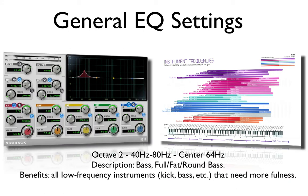Octave 2: 40 hertz to 80 hertz with a center point of 64 hertz, will have a very bassy, full, fat, round bass type of sound. The benefits of this are for any instruments that are low in frequency, like kick drums, basses, etc., that need more fullness.